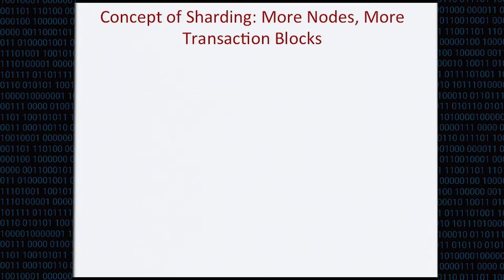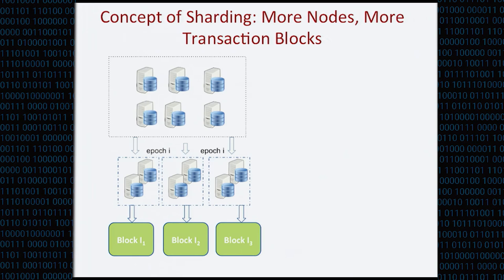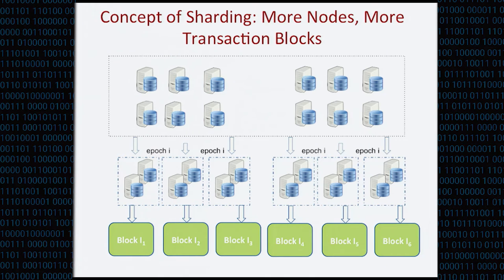At a high level, Elastico achieves scalability by distributing the large network into different smaller committees. Each committee runs a less efficient BFT agreement protocol to propose a block containing a separate set of transactions. If we have more nodes in the network, more committees are created and more transaction blocks are generated. This technique is known as sharding and has been used in distributed databases with centralized operators. What we are showing here is how to apply sharding techniques in open networks where there is no centralized operator and no shared random coin.